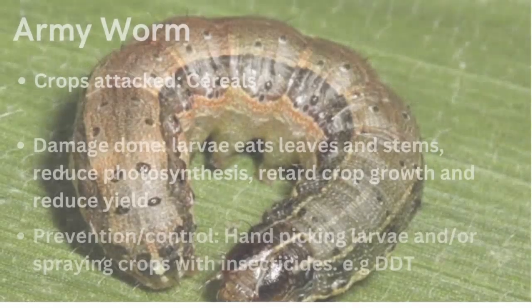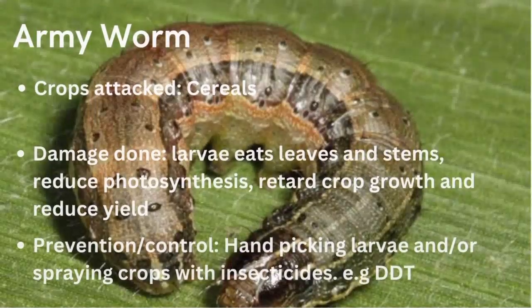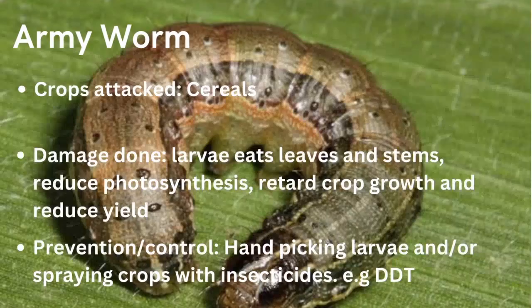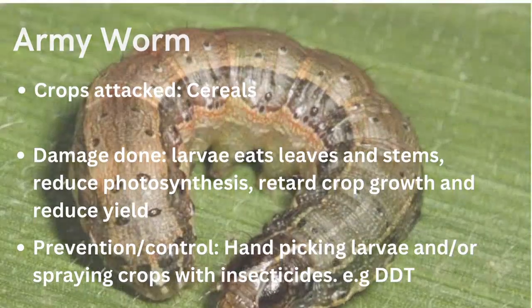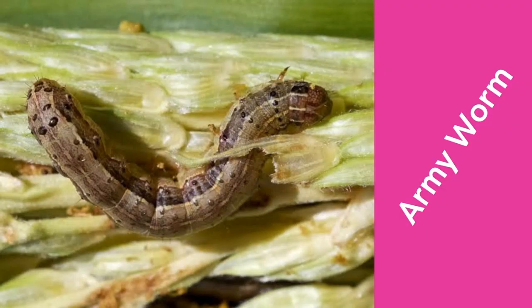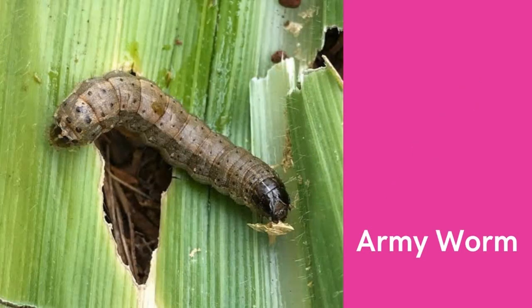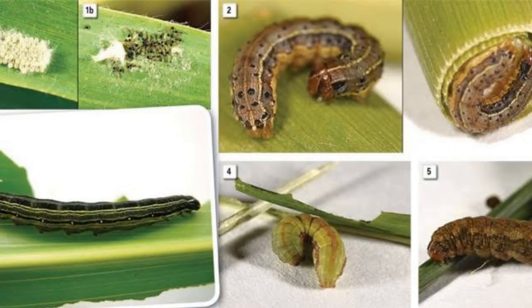Don't forget that rabbits and squirrels are also examples of crop pests — they are crop pests that belong to rodents. Now, armyworms: armyworms attack cereals, most especially maize. The larvae of armyworms normally eat up the leaves and stems of maize, thereby reducing photosynthesis, retarding growth, and reducing yield.